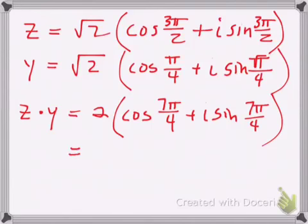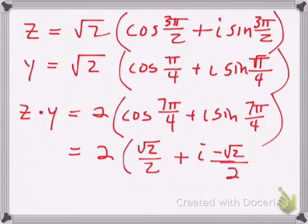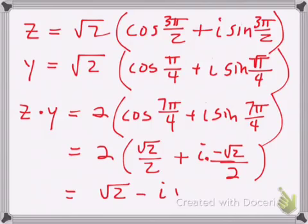That's the polar form answer. To convert to rectangular form: 7π/4 has reference angle π/4, in the fourth quadrant. Cosine of 7π/4 is positive square root of 2 over 2, so 2 times square root of 2 over 2 gives square root of 2. Sine of 7π/4 is negative square root of 2 over 2, so the imaginary part is negative square root of 2. The rectangular form is square root of 2 minus i times square root of 2.